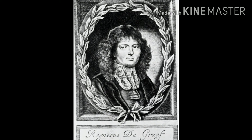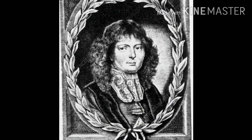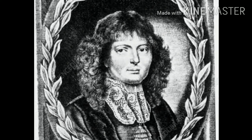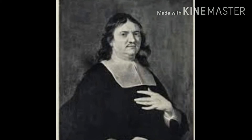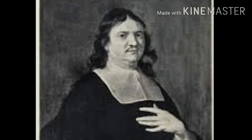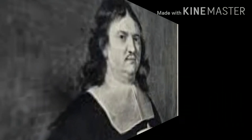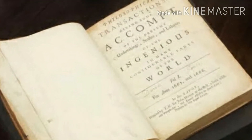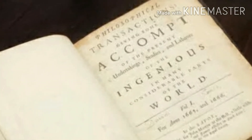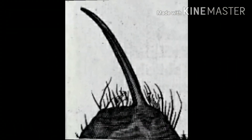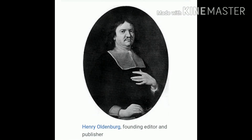In 1673, a friend of Leeuwenhoek, Rainer de Graaf, a brilliant young physician of Delft, wrote a letter about Van Leeuwenhoek's work to Henry Oldenburg, secretary of the Royal Society in London. This letter was published in the Royal Society's journal, Philosophical Transactions in 1673, in which he described the structure of the mould and the sting of the bee. Oldenburg wrote to the author requesting further communication. Thus began a correspondence with the Royal Society, which was to continue until Van Leeuwenhoek's death.